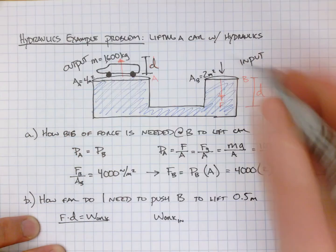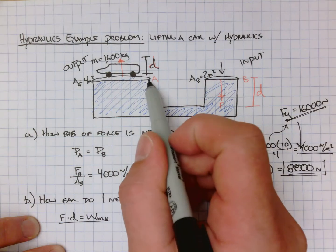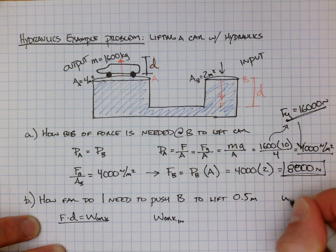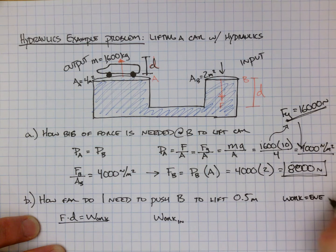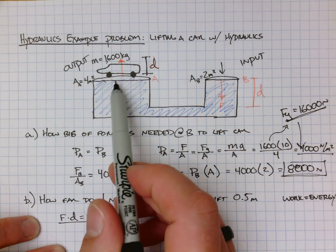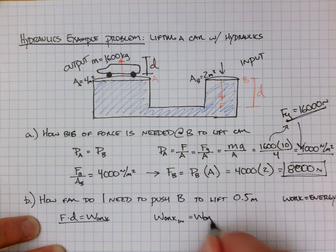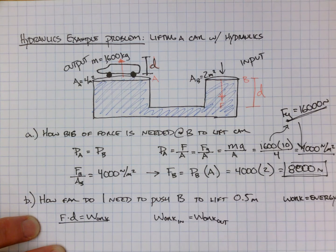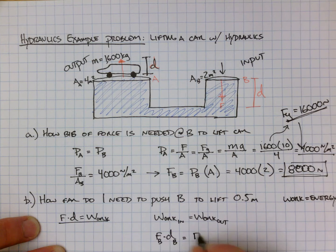The work that I put in at position B is going to have to be equal to the amount of work that I get out at position A. Remember that work has a relationship to energy — I can't put in more energy than I get out, and I can't get out more energy than I put in. So the work input equals the work output, meaning force times distance at B equals force times distance at A.